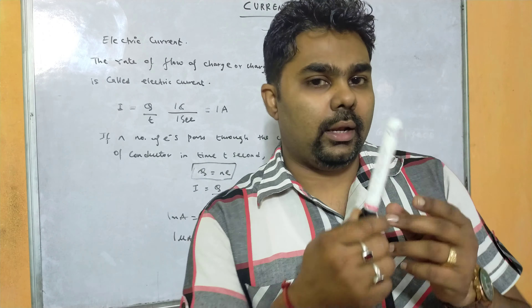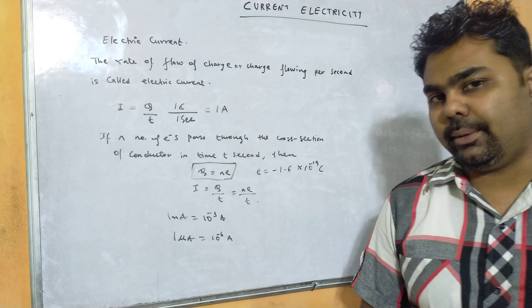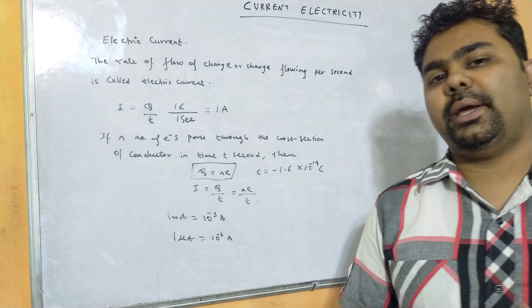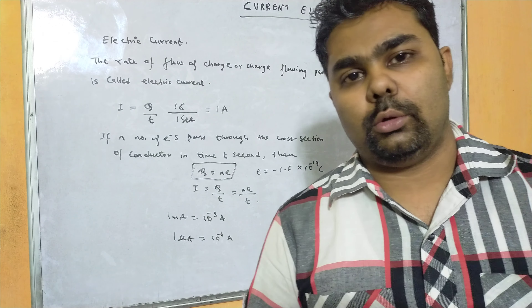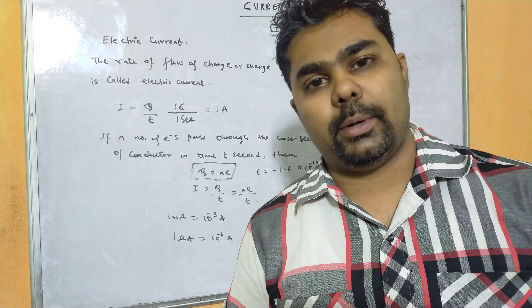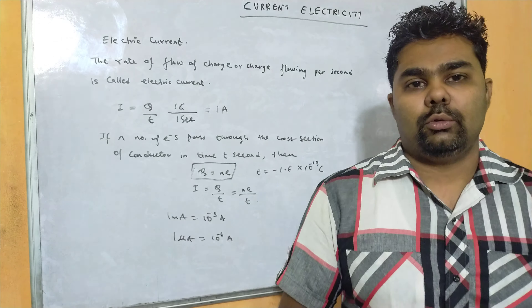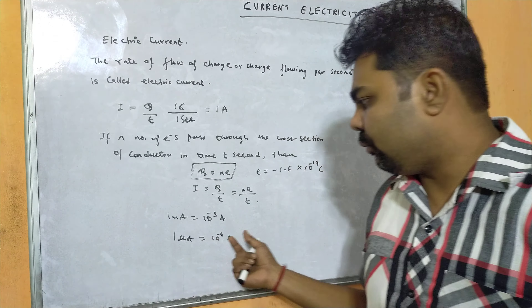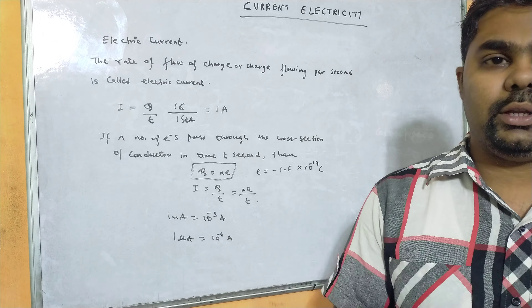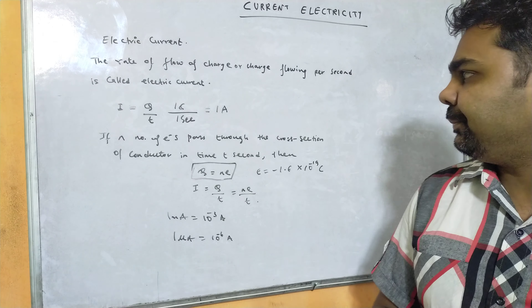Now there are different units and multiples of current. One milliampere equals 10⁻³ ampere, and one microampere equals 10⁻⁶ ampere. These are the units we will be using in numericals.